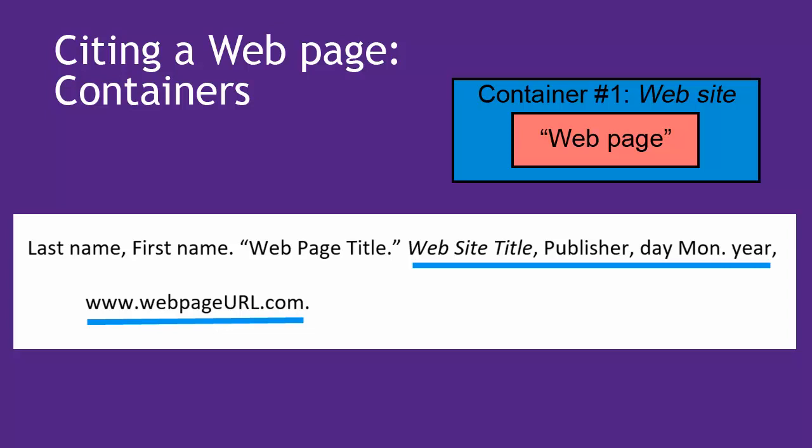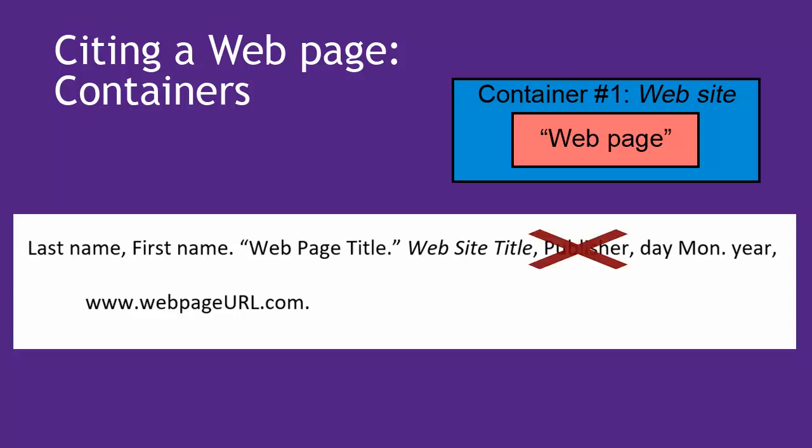If we're citing a work that is missing parts of the citation information, such as date or publisher, you can just leave that part off. Very often, the publisher's name is essentially the same as the website name, so in that case you can leave the publisher part off, too.